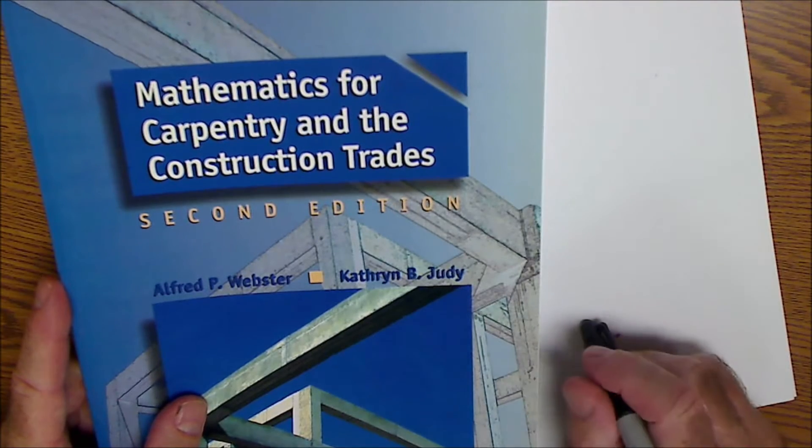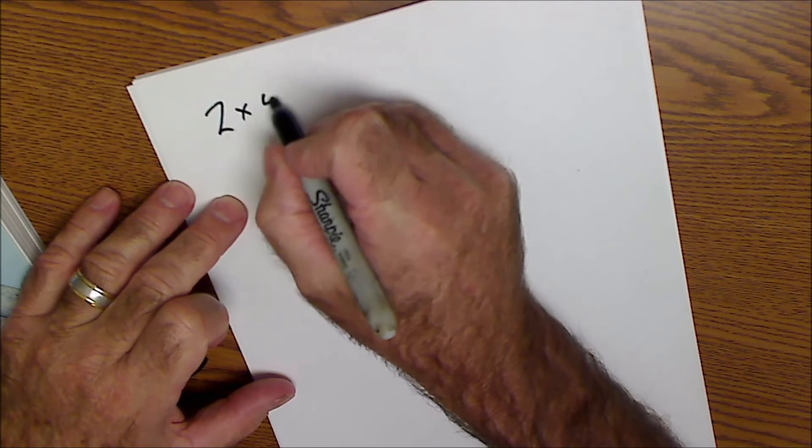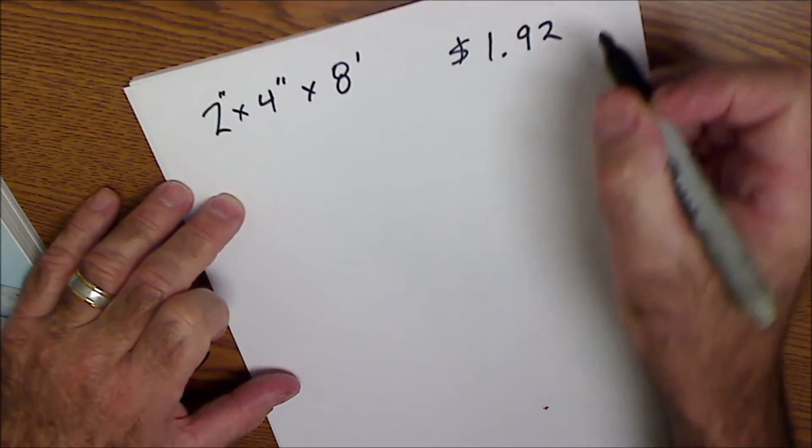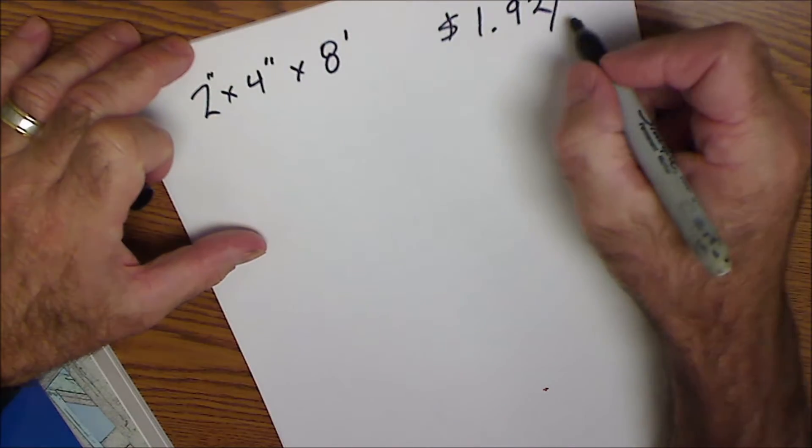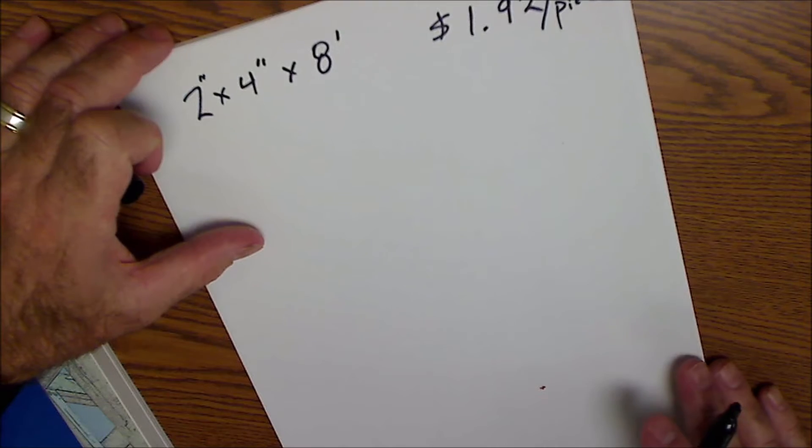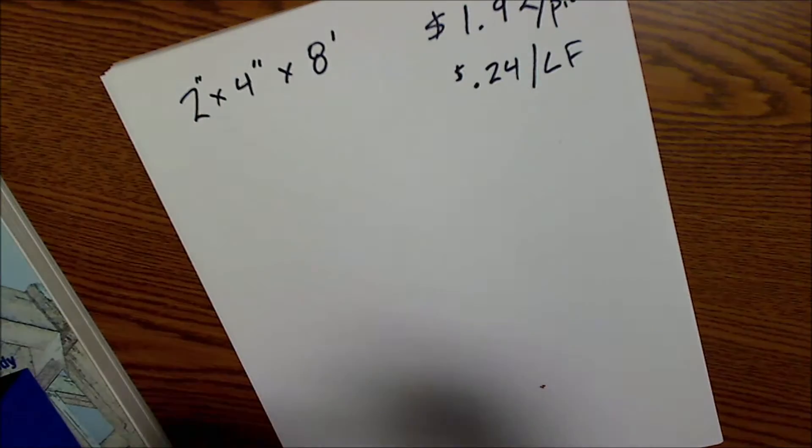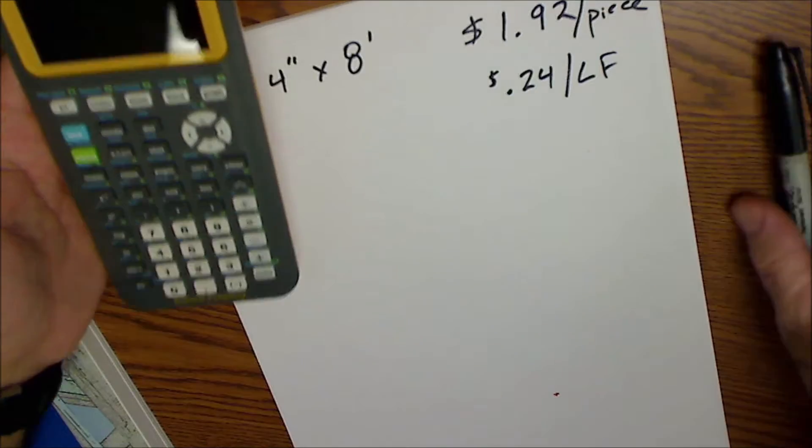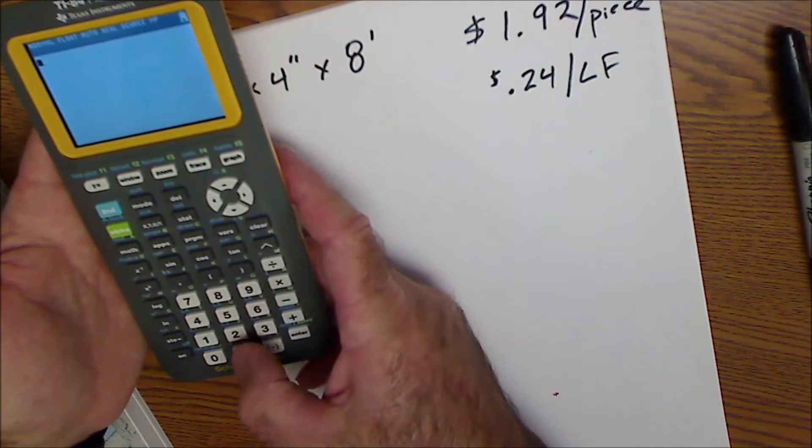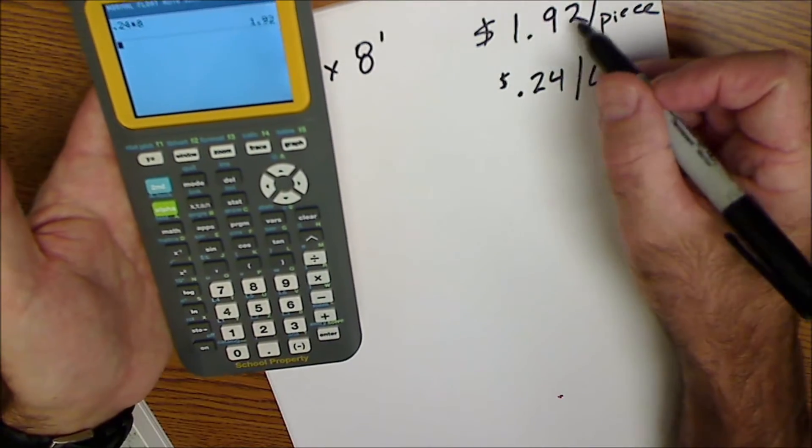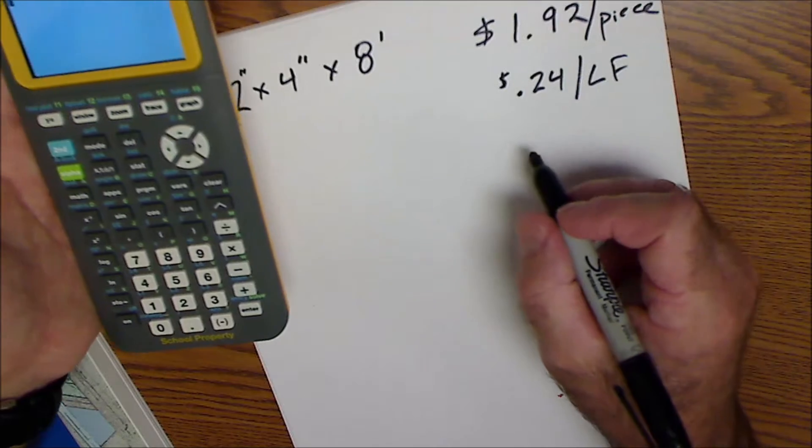Let's go over to my desk. I'll put the camera over my shoulder and we'll work on converting some of these units to other units. Before we go over some of the problems in this book, let's just take a look at our original two by four example. So we have a two inch by four inch by eight foot long board. The piece rate was $1.92 per piece or per board, and then the next cost we had was 24 cents a linear foot. You can see that 8 feet times 24 cents equals $1.92. So that's why the linear foot and the price per piece are the same.